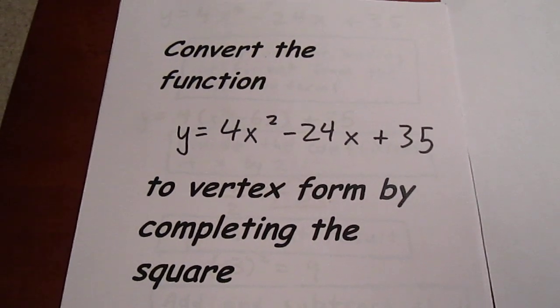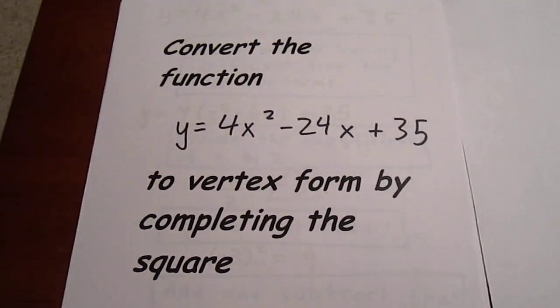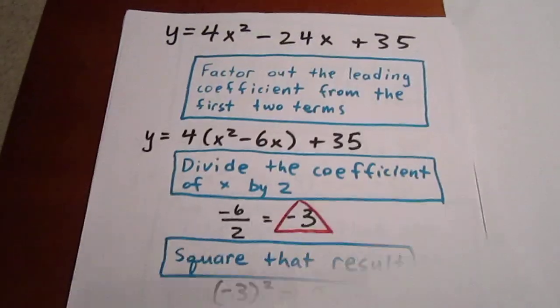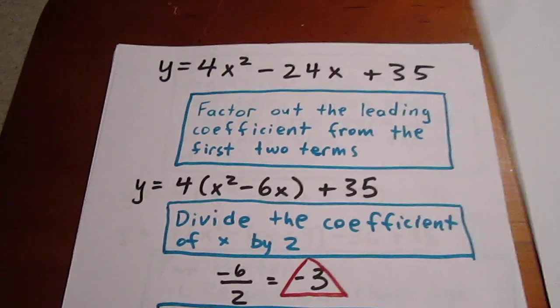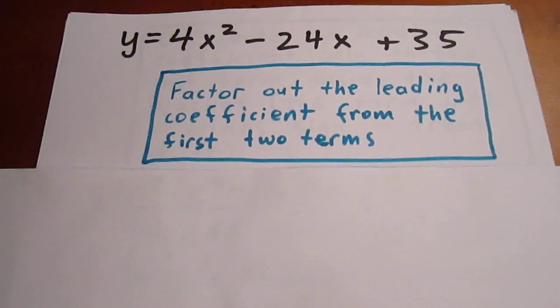We'd like to convert the function y=4x²-24x+35 to vertex form by completing the square. We have to follow a series of steps. The first thing we need to do is factor out the leading coefficient from the first two terms.